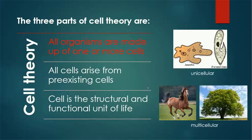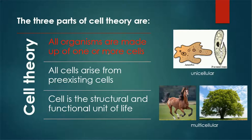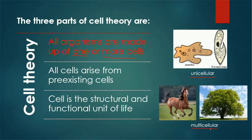The first point: all organisms are made up of one or more cells. We know cell is the unit of life, and cell organelles floating in the cytoplasm are wrapped by the cell membrane to form a compact structure of the cell. There are two types of organisms: unicellular, which means they are made up of one cell, and multicellular, which means they are made up of more than one cell. Examples of unicellular organisms are amoeba and paramecium, while multicellular organisms include horse, tree, human, mouse, and all other higher-level organisms.